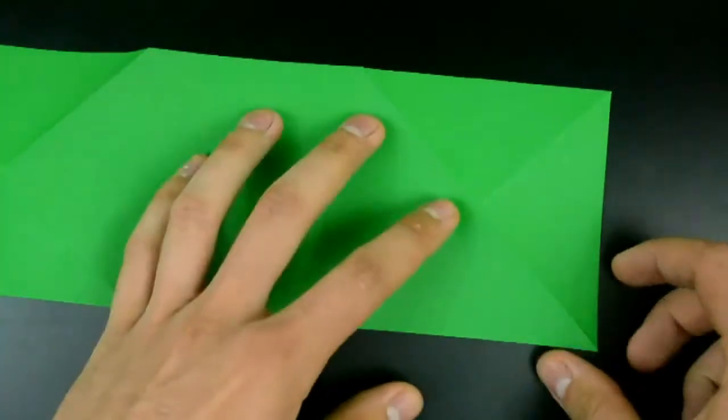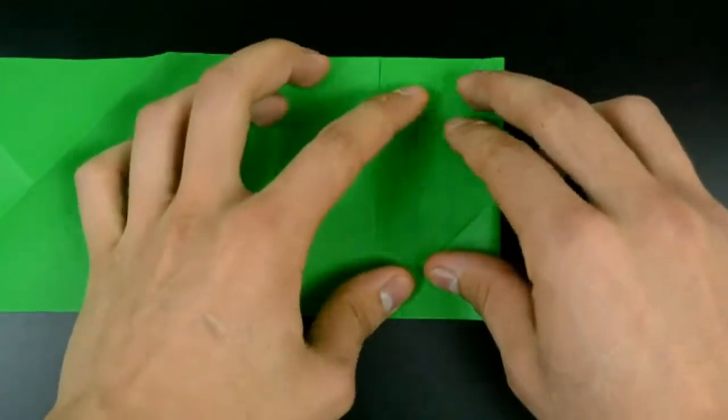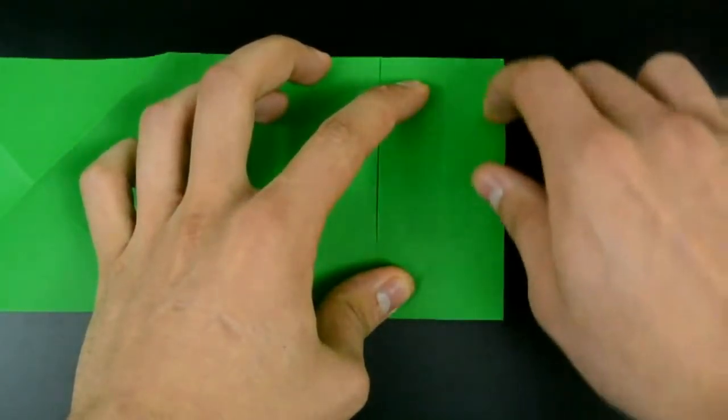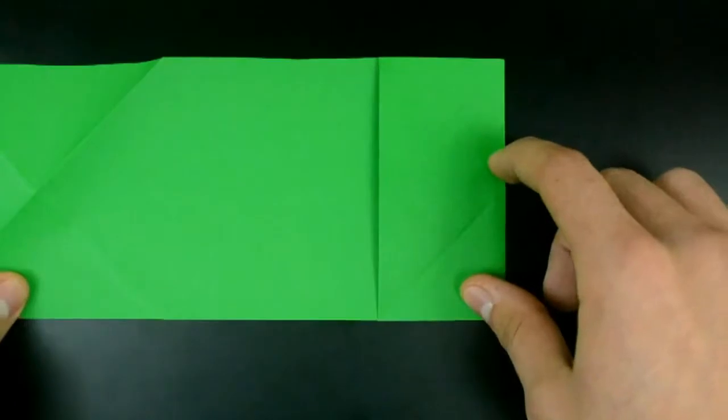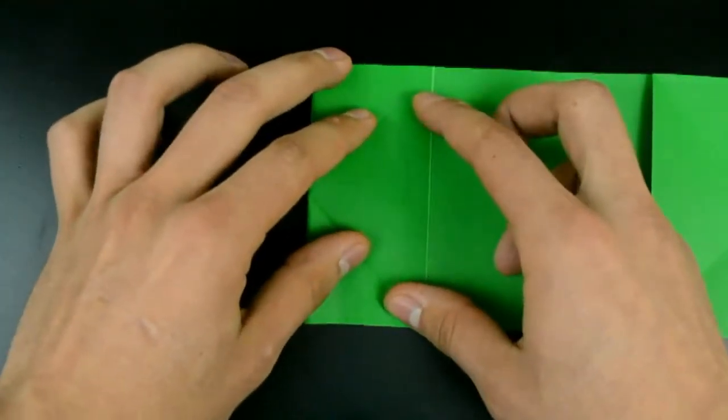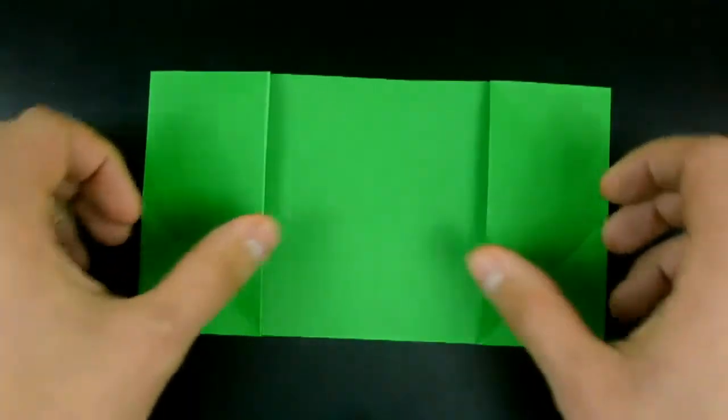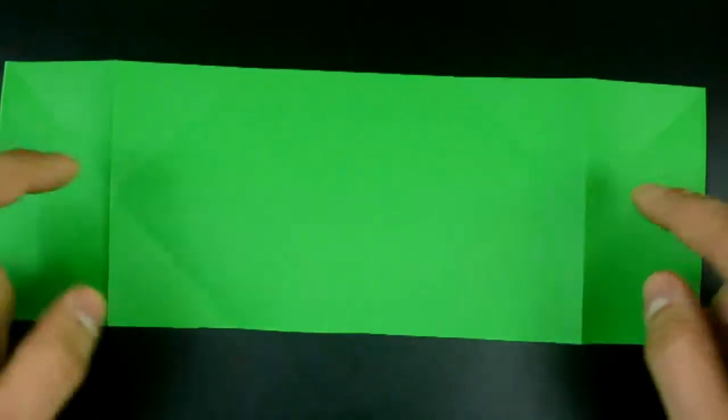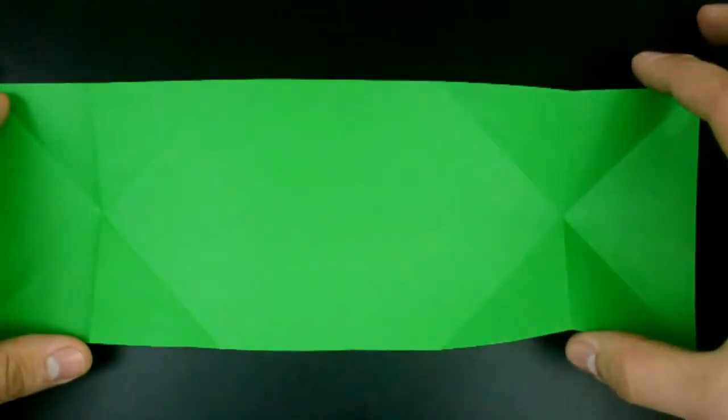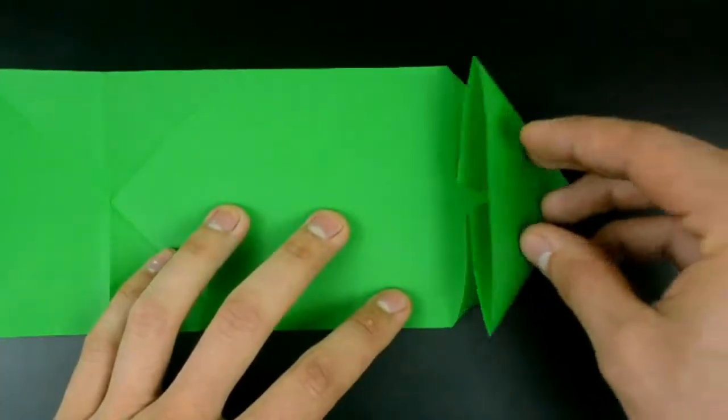First, the right side, just bring the edge to the end of the letter X. And the same on the other. Now undo both, turn the paper over, push the middle, and close like a triangle, bringing the paper like that.